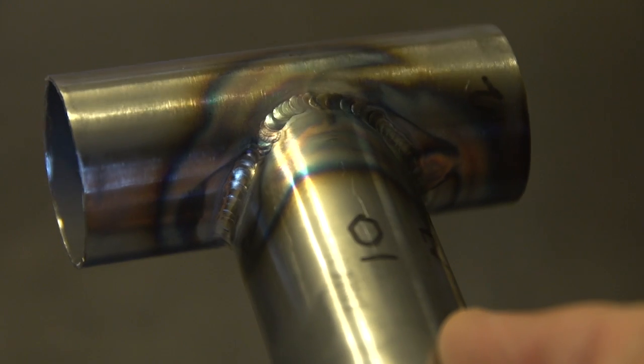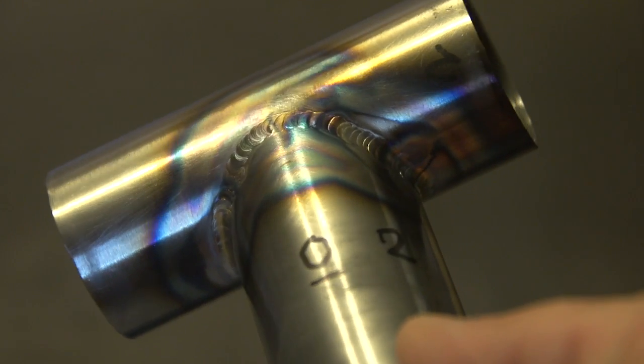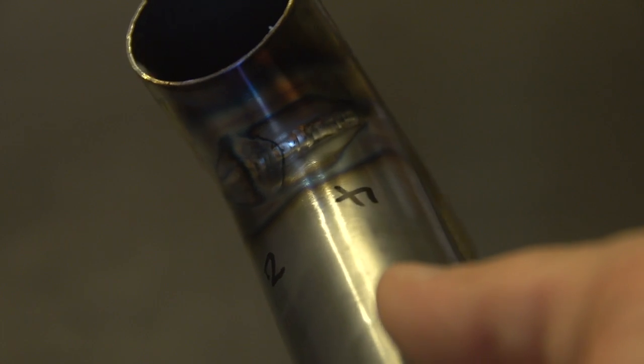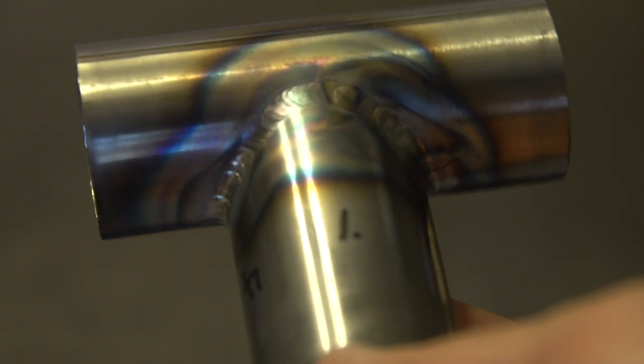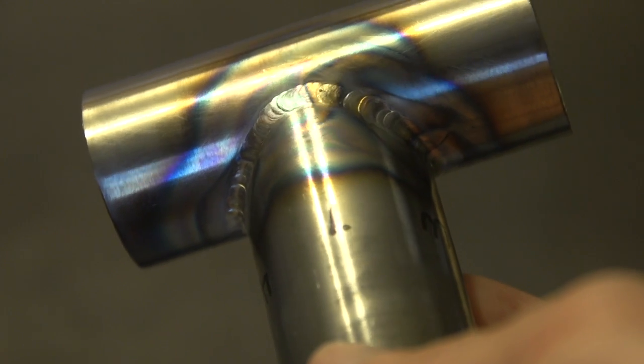Alright, finished weld. We got some good spots, some bad spots. We're coming around to the part where I took the filler rod out and then dipped it back in. It wasn't shielded and there it is, that cool junk right there.